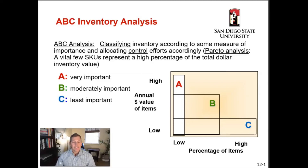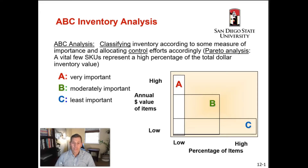ABC inventory analysis is a method for classifying inventory according to some measure of importance and allocating control efforts accordingly. It's also known as Pareto analysis, where a vital few amount of SKUs represents a high percentage of the total dollar value of the inventory. Your A items are very important, your B items are moderately important, and your C items are the least important.